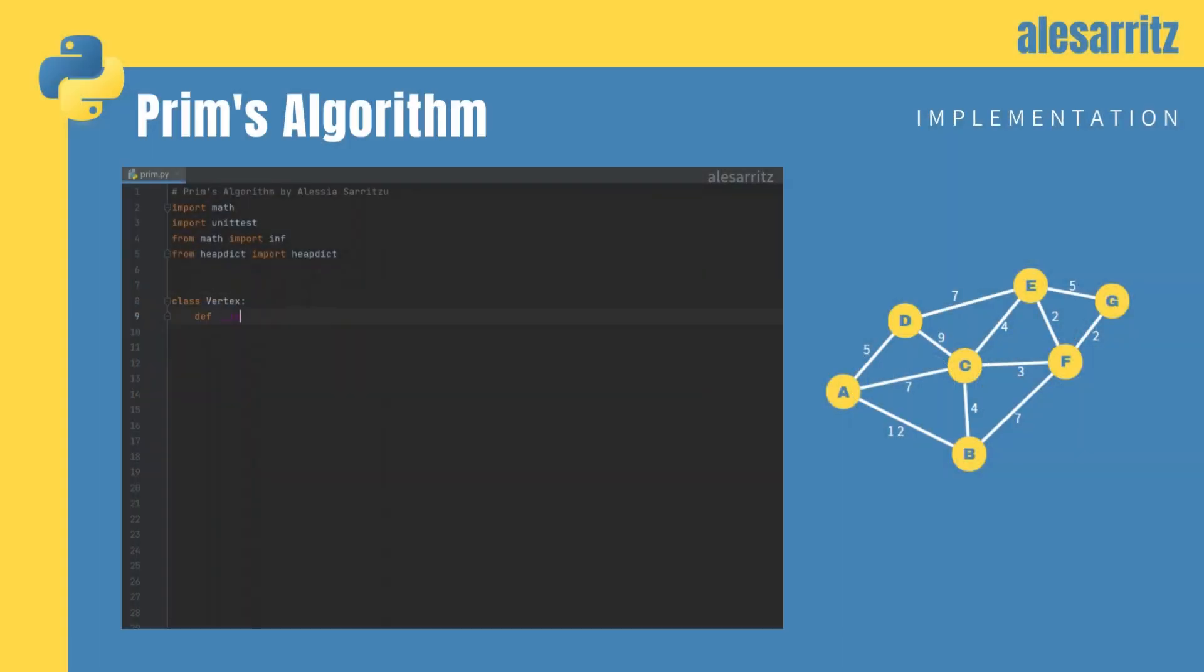Let's begin implementing the classes we'll need for Prim's algorithm. First, let's write the vertex class. We'll need the initialization function and another function to add edges.